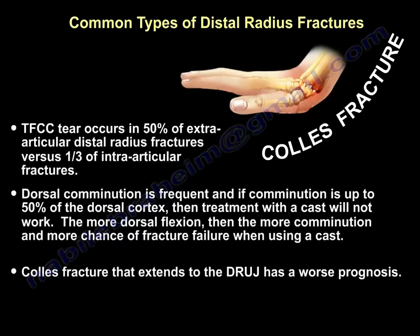TFCC tears occur in about 50% of extra-articular distal radius fractures versus one-third in intra-articular fractures. Dorsal comminution is significant and important. If the comminution is up to 50% of the dorsal cortex, then treatment with a cast will not work. Some people believe one-third cortex comminution will prohibit using a cast.